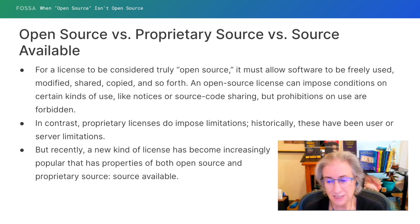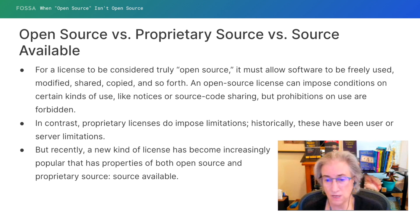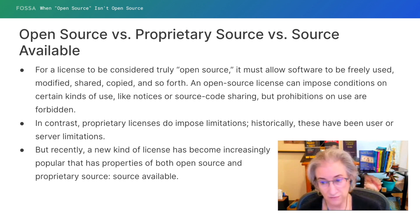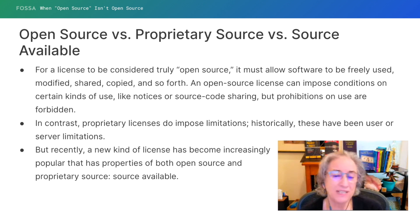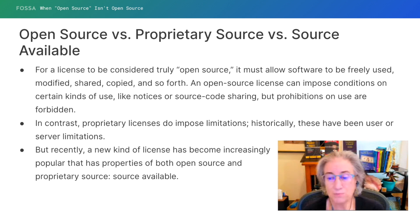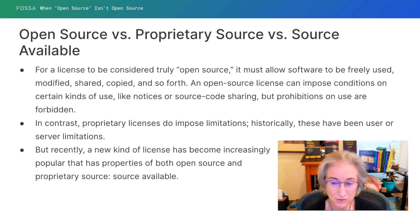It can impose conditions — lots of people get confused about the difference. A condition is: if you do this thing, you have to do this other thing. For instance, if you drive a car, you have to get a license, but you don't have to get a license if you're not going to drive your car. Licenses like GPL impose significant conditions; permissive licenses impose hardly any conditions at all. But to be open source, the most important overarching quality is no license restrictions, no field restrictions, no market restrictions, no territory restrictions, and so forth.